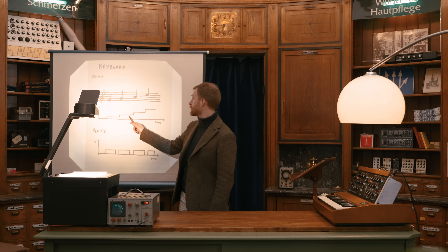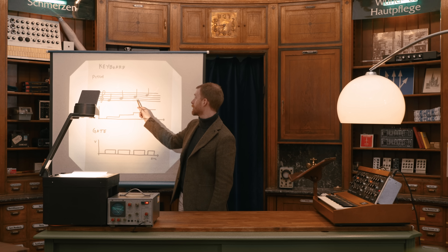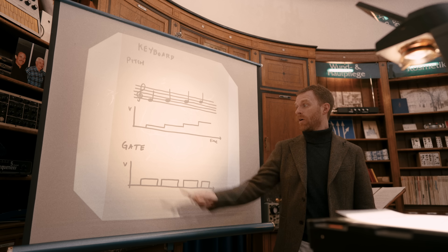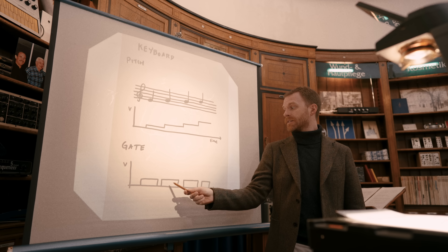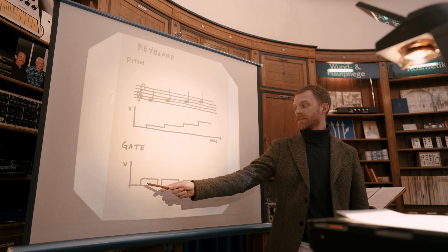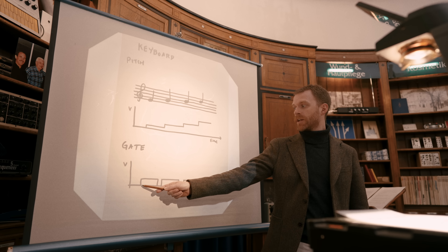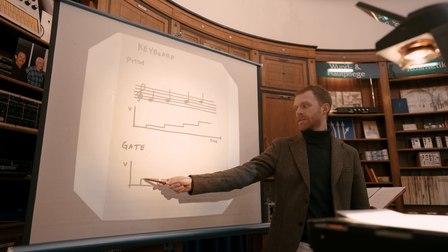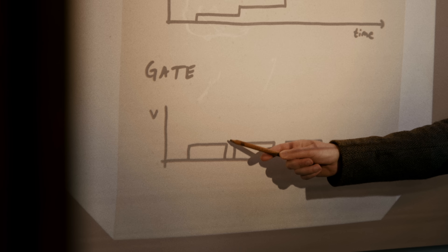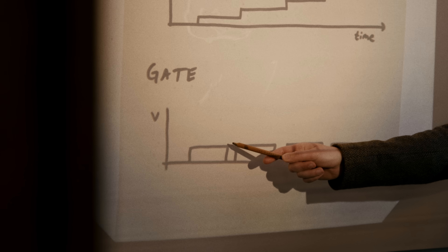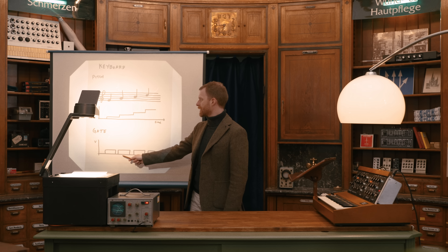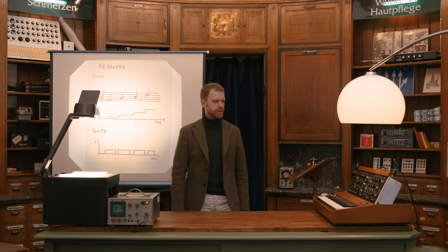The keyboard sends a precise voltage to the oscillators to tune them to the correct note, and it also sends a gate signal. The gate signal is zero volts at all times until we press a key, at which point it jumps up to eight volts and stays there all while the key is held. When we release the key, the gate jumps back down to zero volts. This simple signal can be used to create notes.